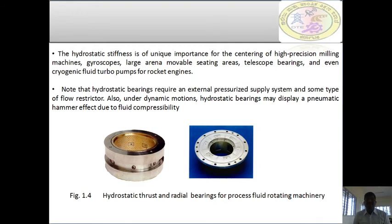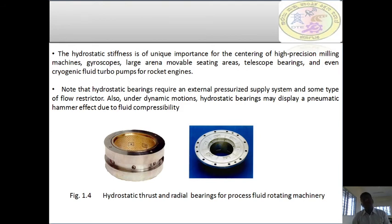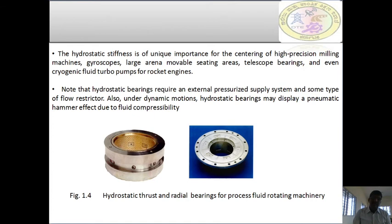Note that hydrostatic bearings require an externally pressurized supply system and some type of flow restrictor. Under dynamic motions, hydrostatic bearings may display a pneumatic hammer effect due to fluid compressibility, which can be observed when pumping fluid from an external agency. These are hydrostatic thrust and radial bearings for process fluid rotary machines. As you can observe in the figures, oil is supplied through holes to pressurize the bearing and separate the bearing from the journal.